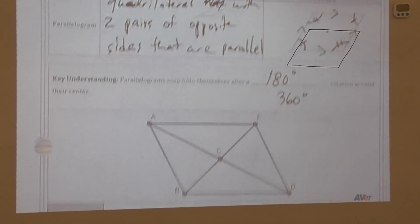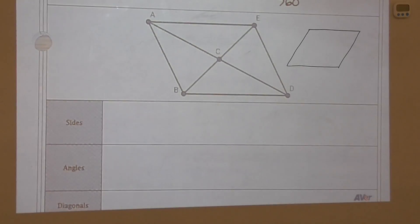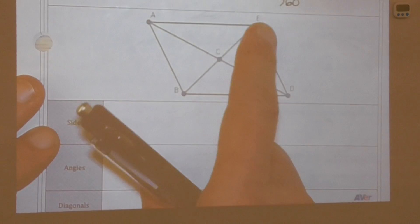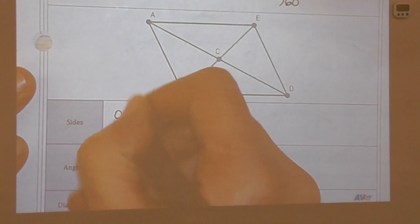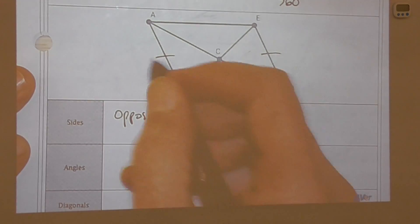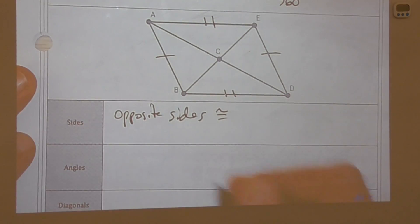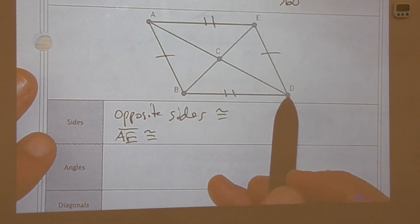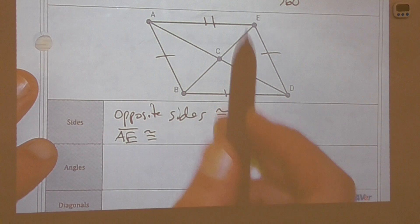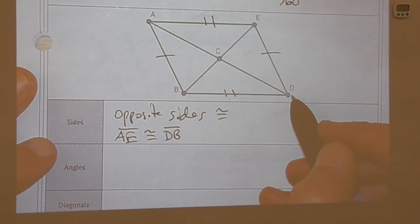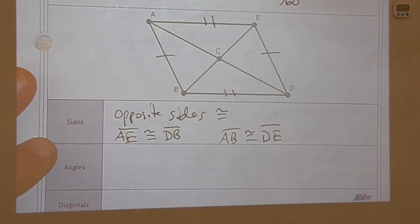Now let's talk about the sides of the parallelogram. Not only are the opposite sides of a parallelogram parallel to each other, they're also congruent to each other. We mark these sides with one congruence mark and these sides with two congruence marks. So AE is congruent to DB, and AB is congruent to DE — they are the same length.